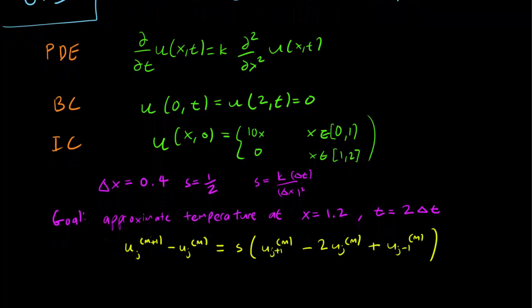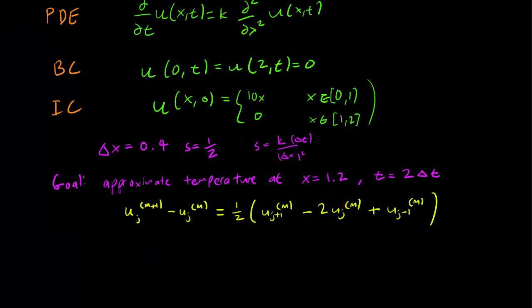So this is our approximate heat equation. And let's remember that we have s equals 1 half. Let's write that down there. Recall again that the u's represent this: u_j^m is the approximate value of the temperature at x_j and t_m.